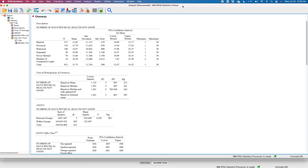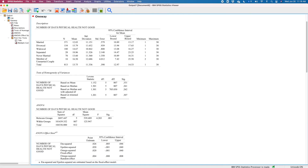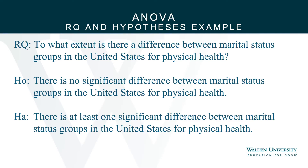My output is right here. We have not yet formulated our research question and hypotheses for this scenario, so I'm going to take you back to my PowerPoint where I've written those out. To what extent are the differences between marital status groups in the United States for physical health? My alternative hypothesis will state that at least one group comparison has to be significant, and the null hypothesis will state that there are no differences between marital status groups in the United States for physical health.